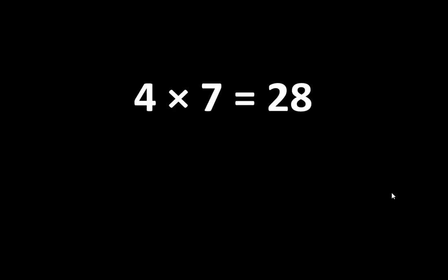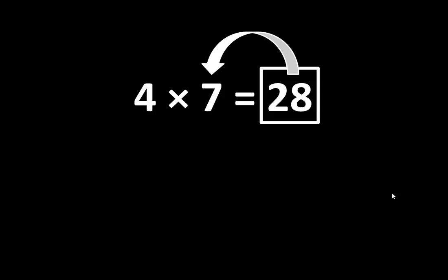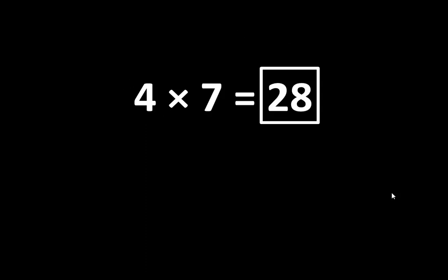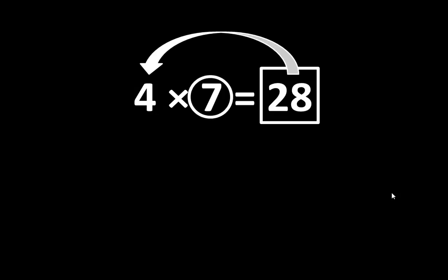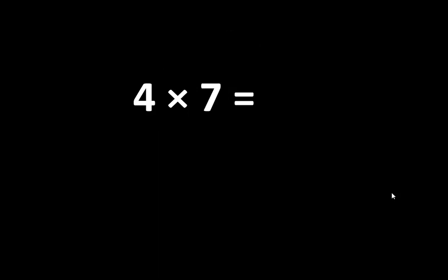When you examine 4 x 7 is equal to 28, you may notice that 28 is greater than 4, and 28 is also greater than 7. But how many times greater? 28 is 7 times greater than 4. And there is another connection: 28 is also 4 times greater than 7. As you can see, there are many relationships among these numbers.